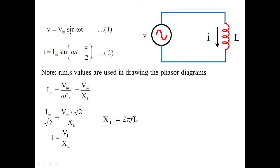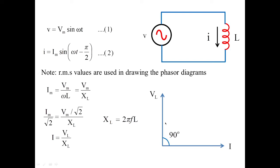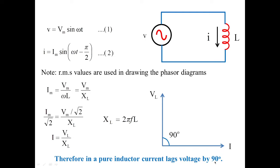To draw the phasor diagram, we use the two equations: V = Vm·sin(ωt) plotted on the y-axis, and I = Im·sin(ωt − π/2) plotted on the x-axis. Clearly, from equations 1 and 2, the current lags the voltage by 90 degrees — π/2 indicates 90 degrees. This is how we represent the phasor of a pure inductor circuit: in a pure inductor, current lags voltage by 90 degrees.